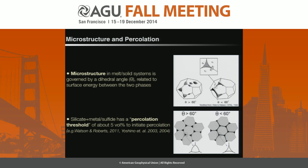Here's a review of how that works. We have a microstructure within the bulk sample governed by the surface energy between the two phases — between the melt and the solid. If the dihedral angle is above 60 degrees, it's impossible to connect all of those melt pockets in an equilibrium microstructure until you reach a critical volume of melt known as the percolation threshold, at which point the melt is connected and can flow through percolation. Below this threshold, the melt is trapped at triple junctions and grain boundaries. For a silicate plus metal-liquid system, that percolation threshold is around 5%.